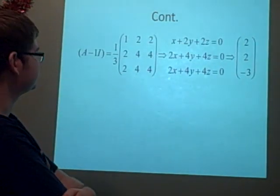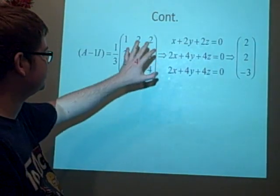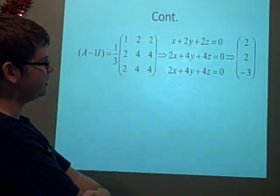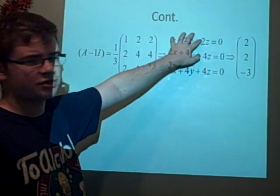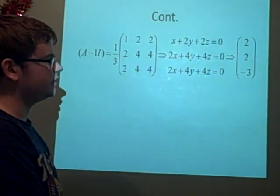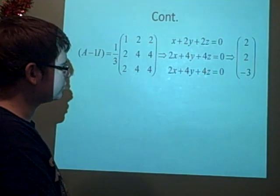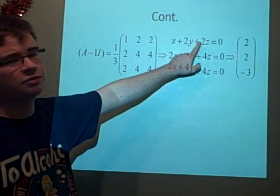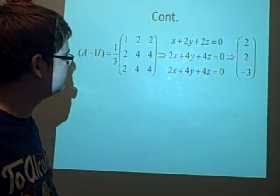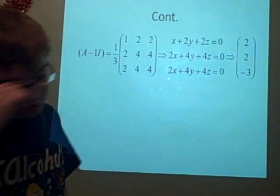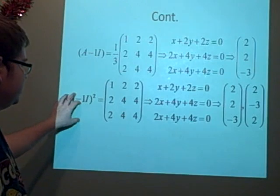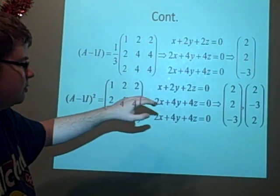This next one, we do the minus 1, so we get this matrix this time. Then we'll get these equations here. Now for this one it's quite difficult because you've got the same matrix repeated. So I just guessed some values. I gave x the value 2 to start off with, and then I gave y the value 2, and then I worked out the corresponding z. That's given me a vector there. Then you'll find that when you square it again, this is just coincidence, it won't always happen like this, we get the same matrix again.